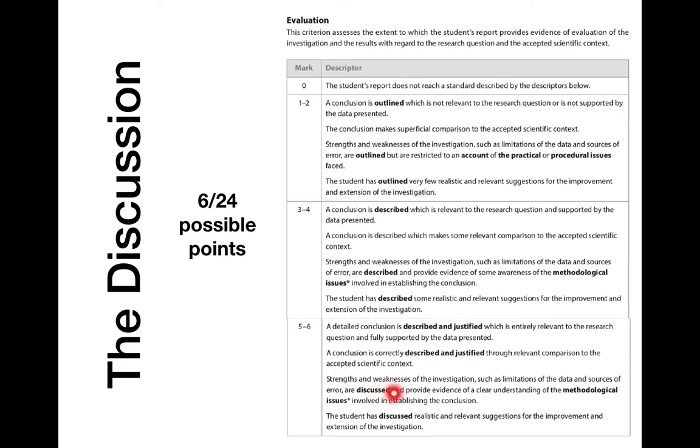You talk about strengths and weaknesses of the investigation. There's limitations of the data and source of error. They're discussed and provide evidence of a clear understanding of the methodological issues involved in establishing the conclusion. Notice how it doesn't talk about human error. We'll talk about that in a minute, but the methodological issues, things you could improve your methodology if you had any better equipment, or you had more time, or you had learned more things before you start your IA. And the last one is the student has discussed realistic and relevant suggestions for the improvement and extension of the investigation. So discussed means several sentences talking about I would do this because this and this is how I would do it. How would you improve it and how would you extend it? So extending means looking into other variables maybe, extending into other species, what are you going to do to learn more about this topic?